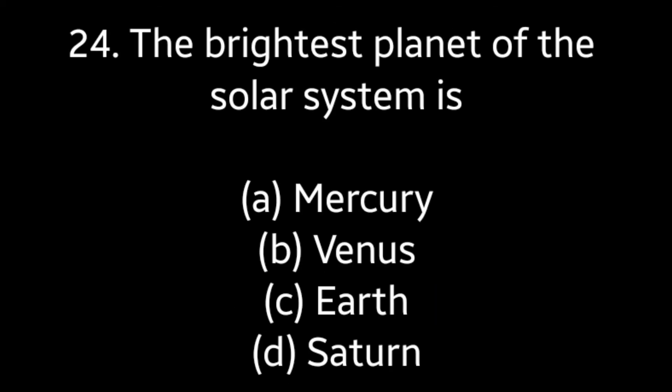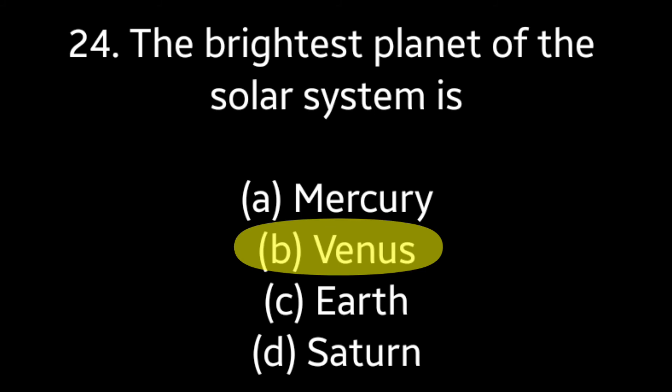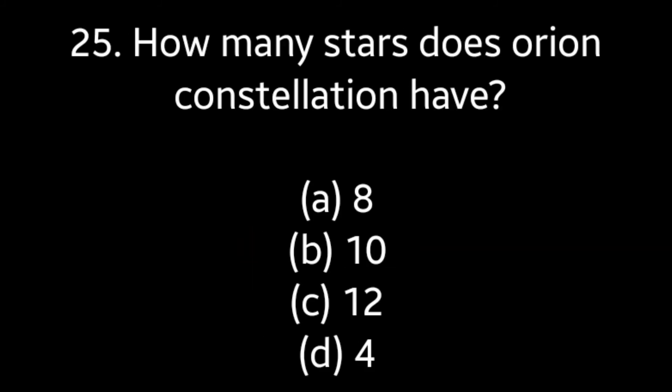Question number 25: How many stars does the Orion constellation have? Options: 8, 10, 12, 4. Answer is option A — 8.